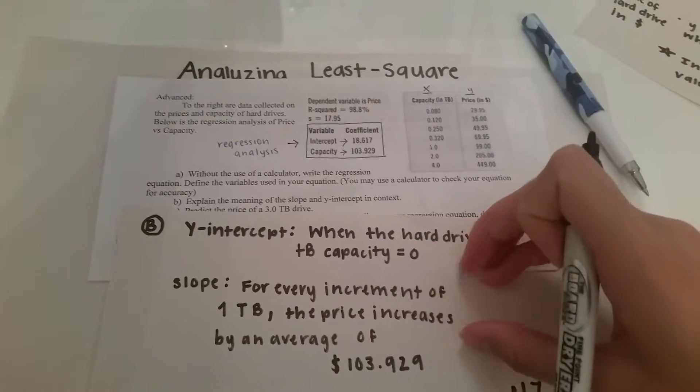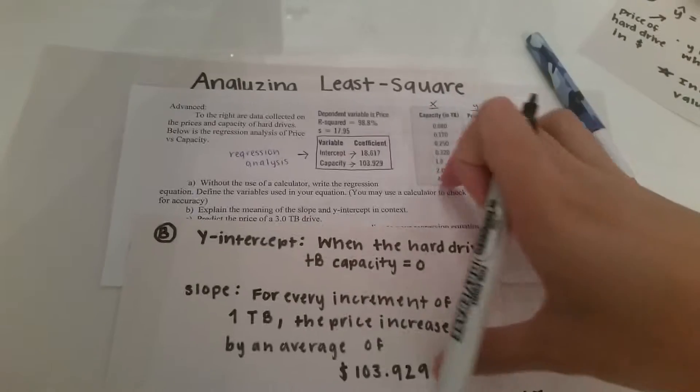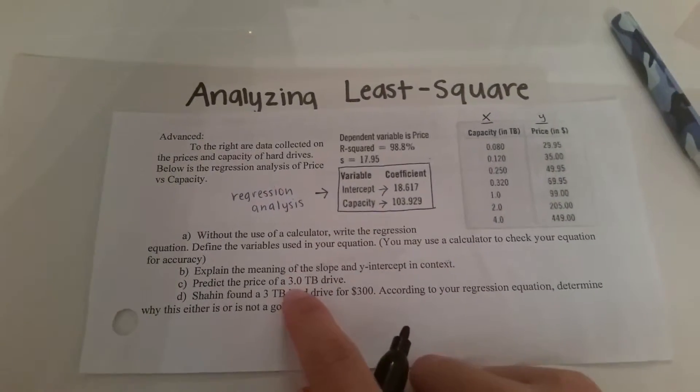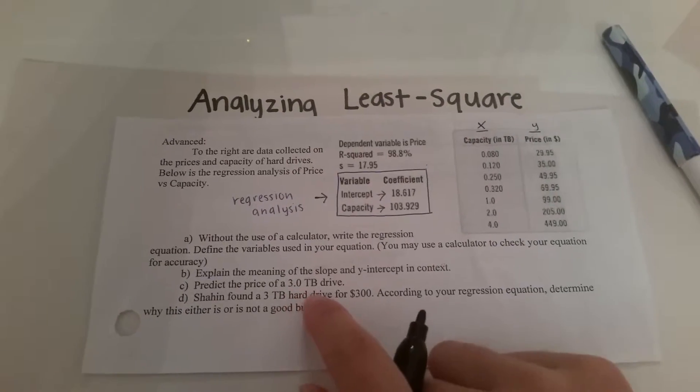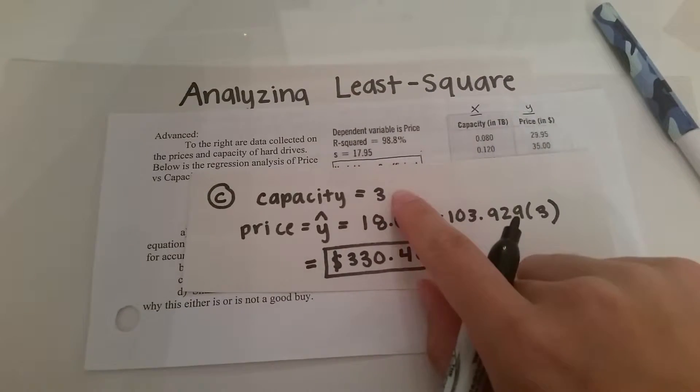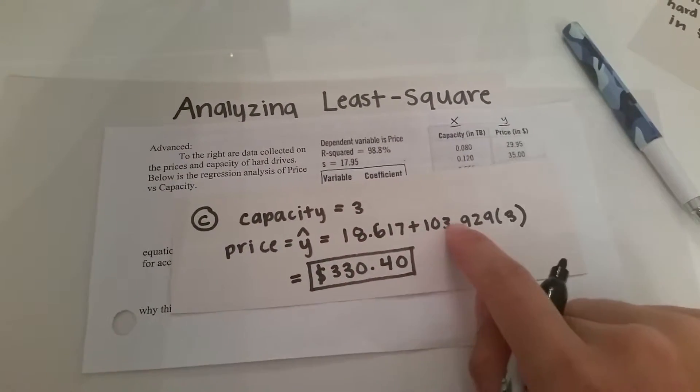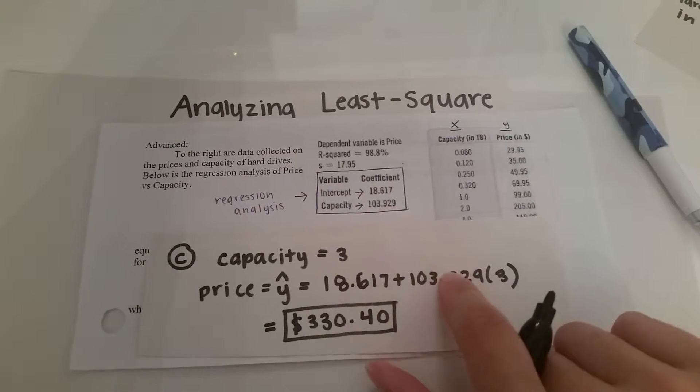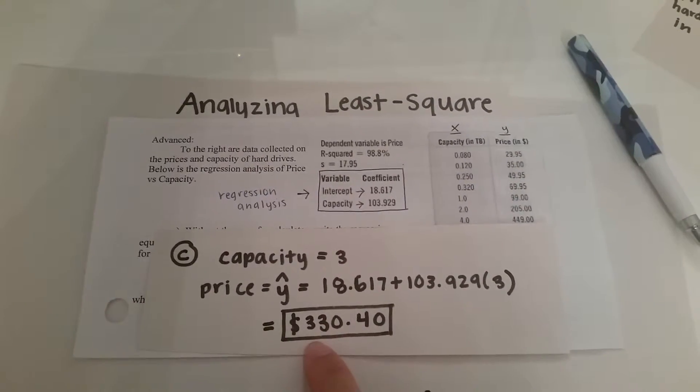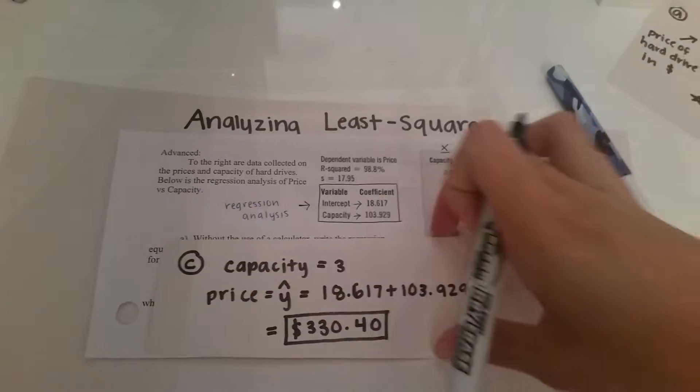Now part c predict the price of a 3.0 TB drive. Now if the capacity is three that means that x is equal to three. If you simply input that into your regression equation you will get that the estimated price will be 330.40 dollars.